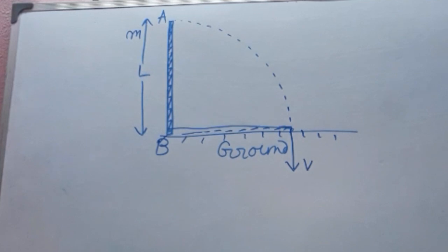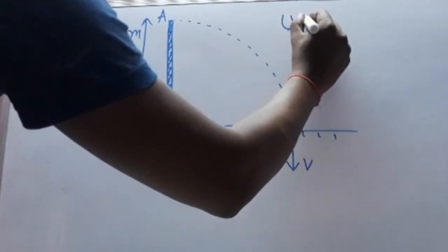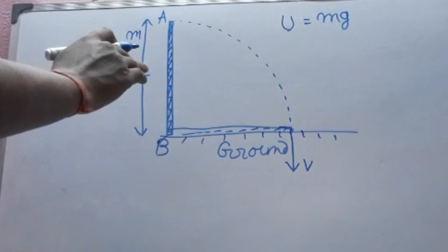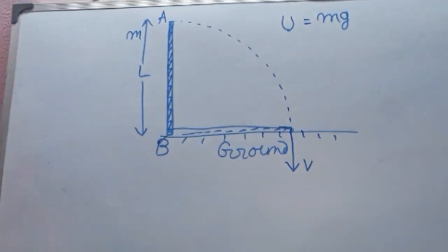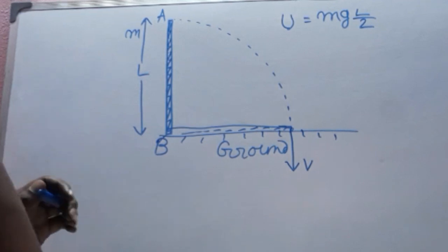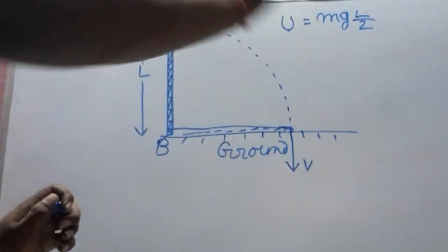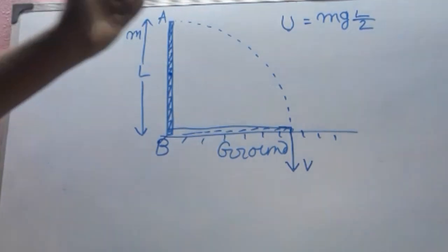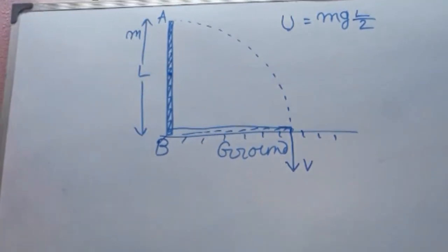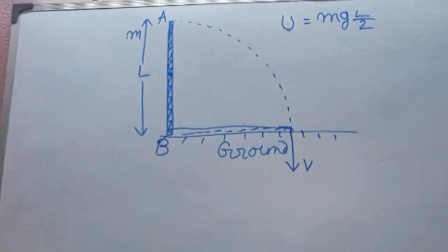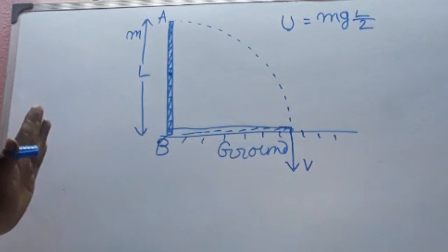Now, the potential energy of the rod is given by U equal to mass of the rod times acceleration due to gravity times the height of the center of mass of the rod from the ground. If the rod is uniform, then the height of the center of mass is L by 2 from the ground. When the rod falls down and strikes the ground, its total potential energy is converted into kinetic energy. We take the reference level of potential energy as the ground.